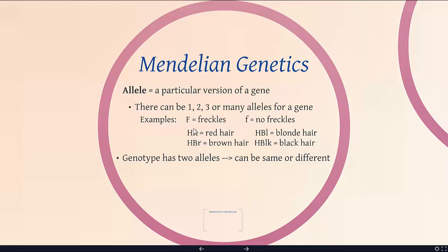With hair color, you could have two HR's, two HBL's, or one HR and one HBL, or one HBL and one HBLK. So you can see there are many possible combinations, but you will always have two alleles.